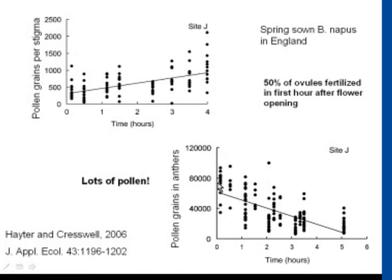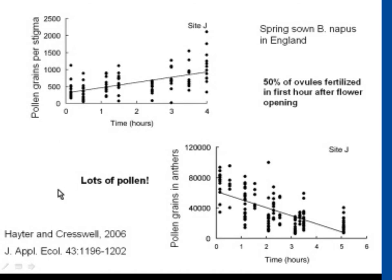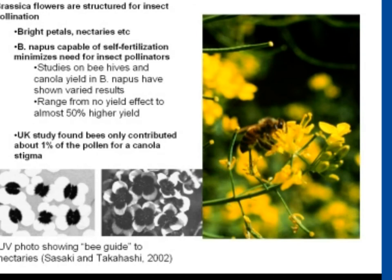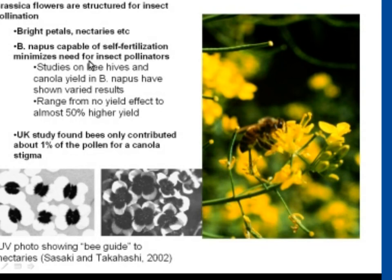There's lots and lots of pollen, and about half of the ovules are actually fertilized in the first hour after flowers are open. Initially, the ovules are probably the limiting factor, but then the pollen grains just overwhelm the number of ovules. The Brassica family was originally structured for insect pollination because they have very bright petals and UV guides on their petals, as well as nectaries. So these flowers were designed for insect pollination, and that's probably true for a lot of the self-pollinated Brassica species.